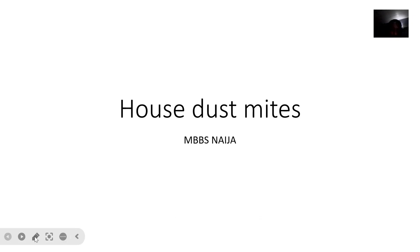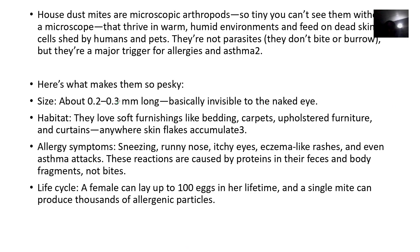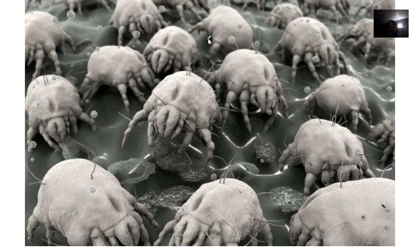Talking about the next group of mites — this is the house dust mites. For the house dust mites, they are actually microscopic arthropods, so they are so tiny you can't see them without a microscope. As you can see, there's a microscopic view shown here.